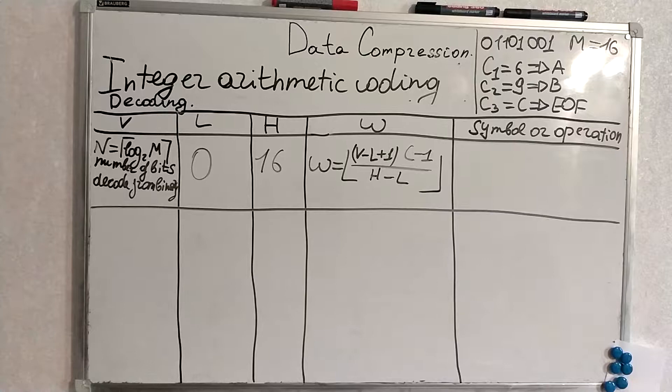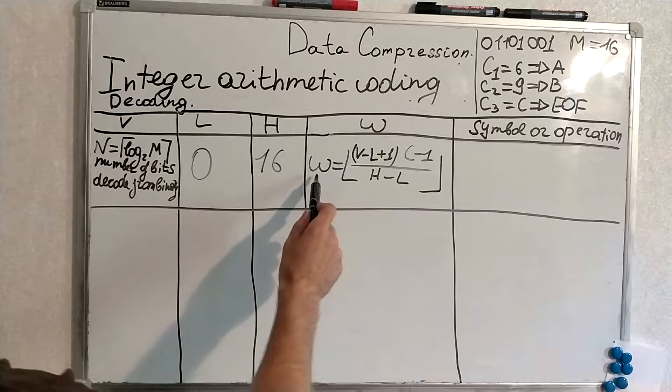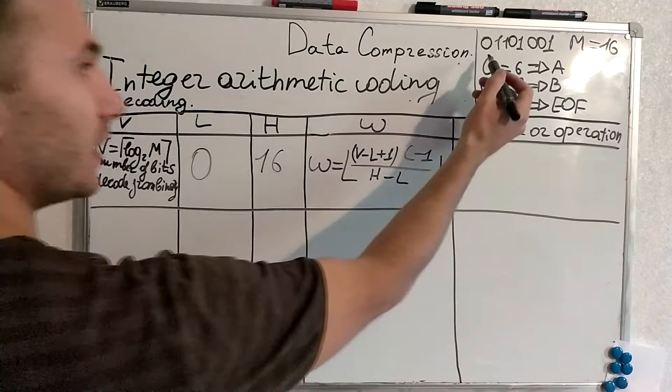So for the decoding we use this and we have some new variables specific to integer arithmetic decoding scheme. We'll use w which is determined by this formula we have v which is determined by how many bits we will use from the given binary number we are decoding which is determined by the formula.